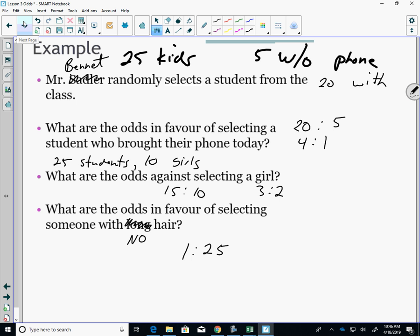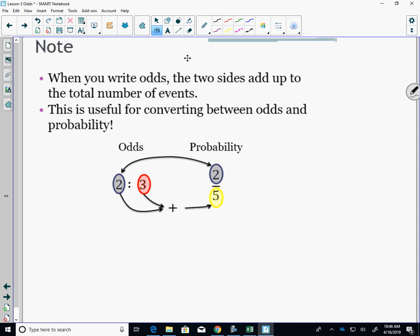Note, when you write odds, the two sides add up to the total number of events. Put a star beside that. That's important. When you write the odds, the two sides add up to the total number of events. Remember, Elvis, you said it was like a fraction there. You said 20 out of 25, right? They have to add up to the total.